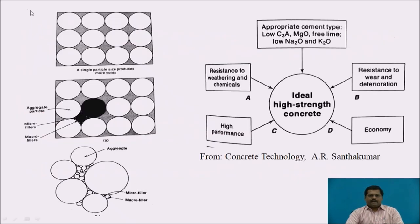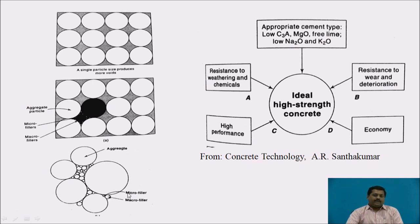Looking at the schematic diagram, aggregate particles have voids among them that are filled by cement matrix and mortar. The macro fillers of voids between aggregates are sand particles, and the micro fillers are cement particles or cement paste in between the sand particles. This is the structure of cement matrix and aggregates at both micro and macro levels.